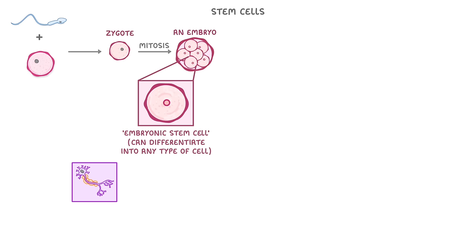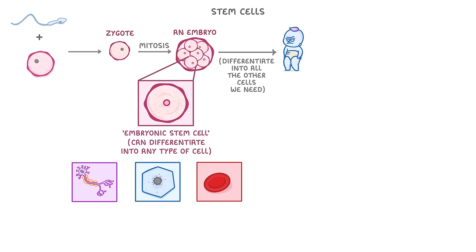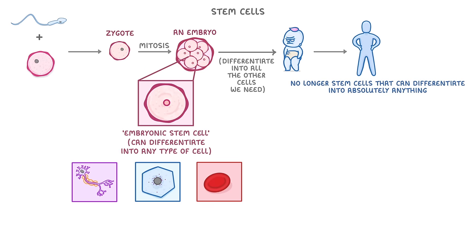Importantly, embryonic stem cells can differentiate into absolutely any type of cell — for example a nerve cell, skin cell, or blood cell. Over time these cells continue to divide and also differentiate into all of the other important cells that we need, and after nine months or so we end up with a baby.